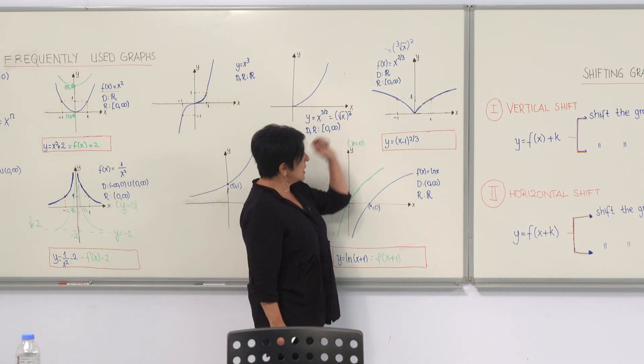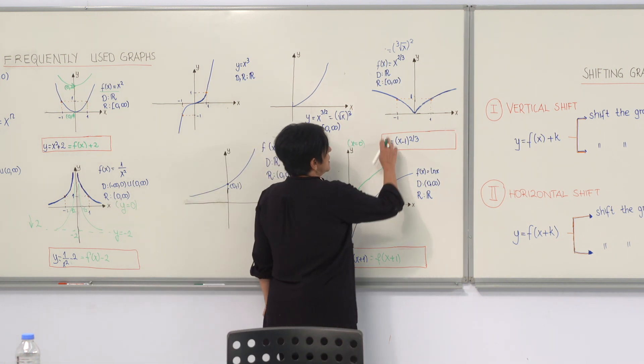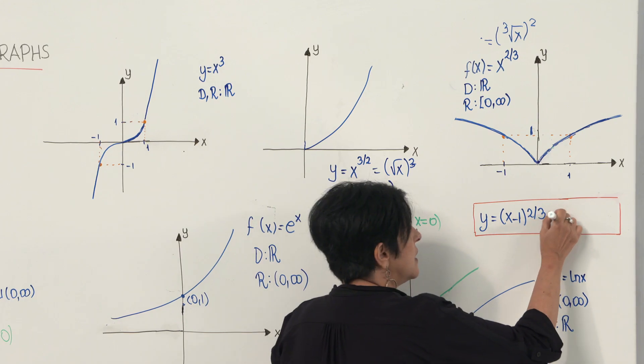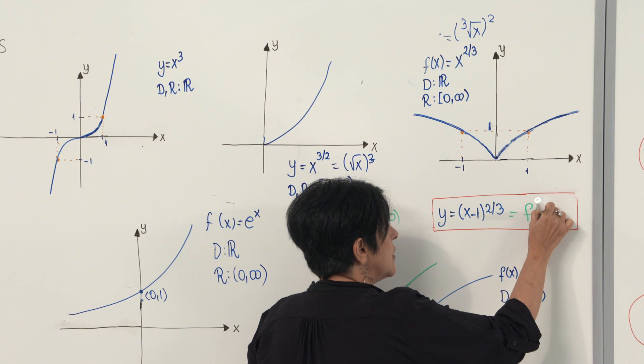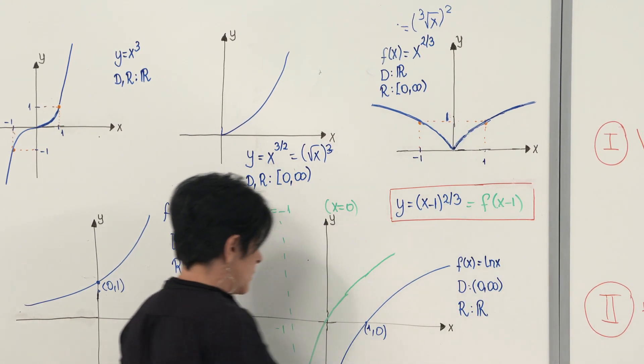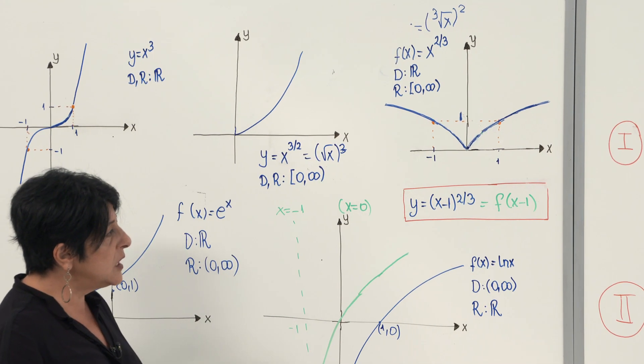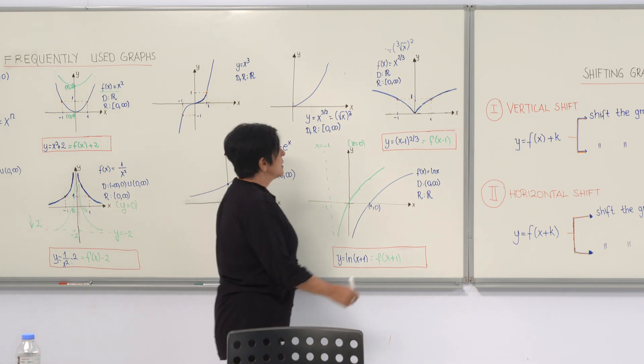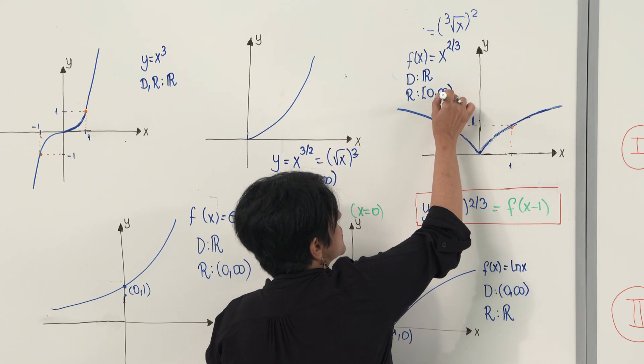Let's look at this example. If you call f(x) to be equal to x to the power 2 over 3, then this is your f(x minus 1), which means you need to shift the graph of f one unit right, which means this is your new graph.